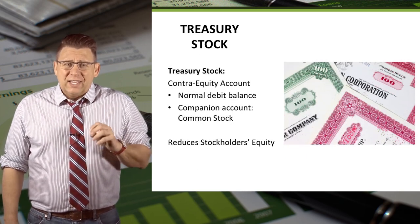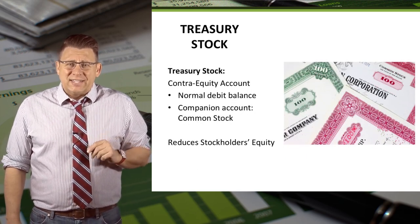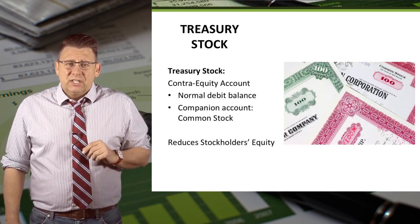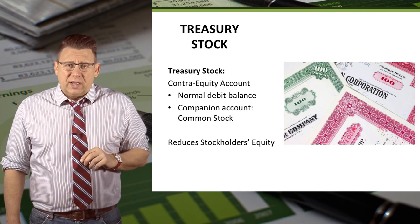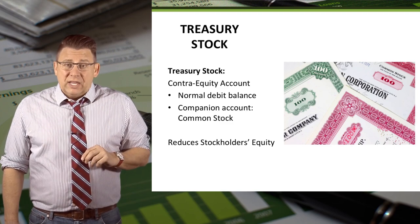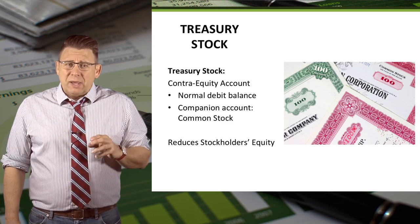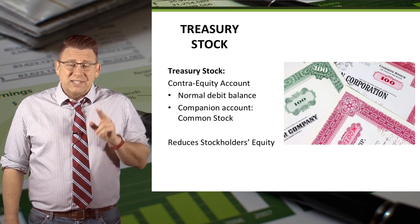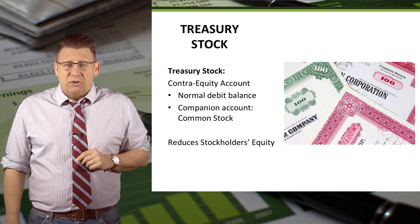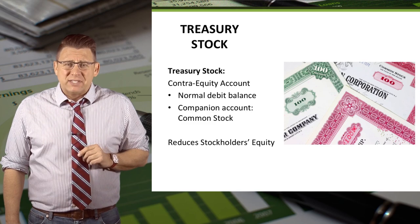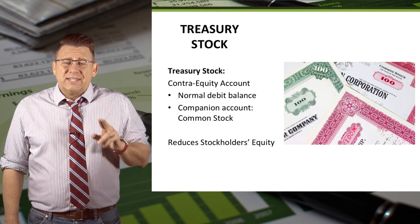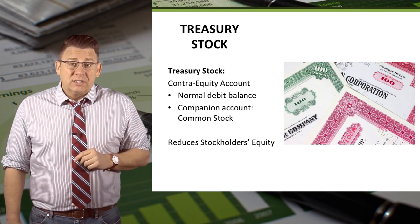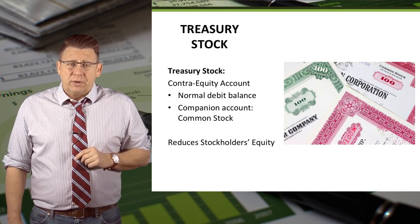Treasury stock is not an asset account. It is a contra-equity account. It has a normal debit balance and its companion account is usually common stock. Because it has a debit balance, it reduces equity.